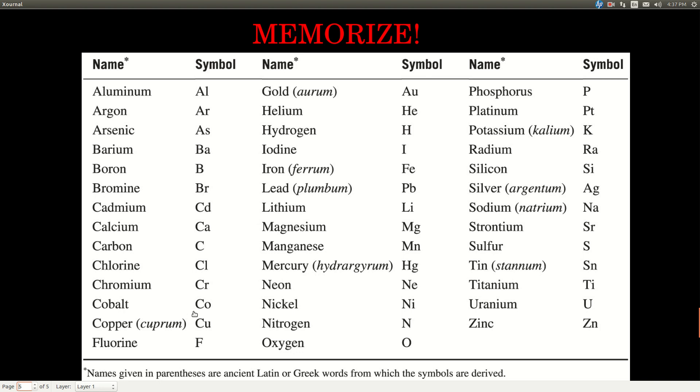It's really easy because most of them, once you start hearing the name, the symbol gives you the first part of the name, like AL for aluminum, for example. However, there are some in which the symbols were derived from Latin or Greek words, and these, it's not as obvious. So, gold came from the word aurum, and its symbol is AU. Iron is FE from ferrum, lead from plumbum, and so on. So, memorize these guys.